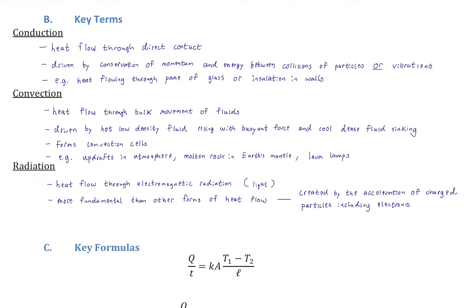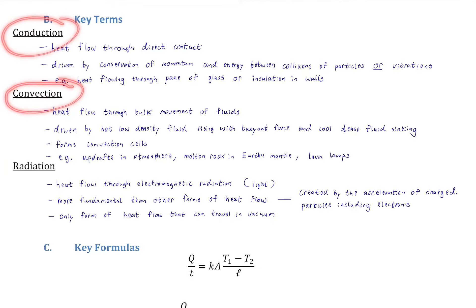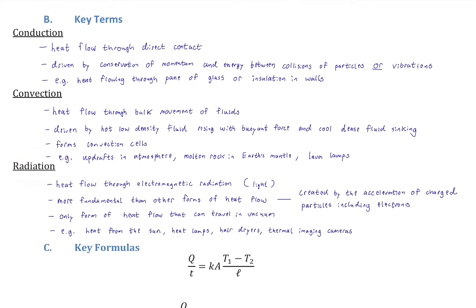Radiation as heat flow is the only form that can travel in a vacuum — a major difference from conduction and convection, which require matter. Heat from the sun reaching Earth absolutely travels through radiation. That's the only way it could travel through space.